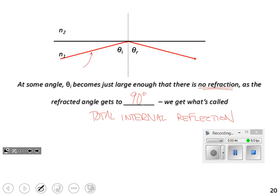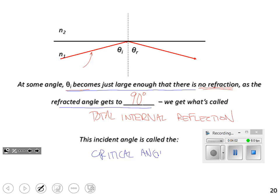And this angle, this incident angle that has become just big enough that the refracted angle gets to 90, is called the critical angle. It's an angle at which and above which all that ever happens is total internal reflection.